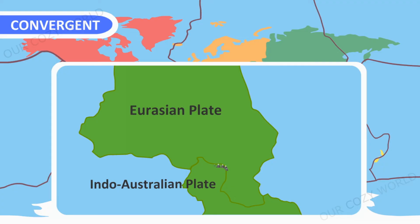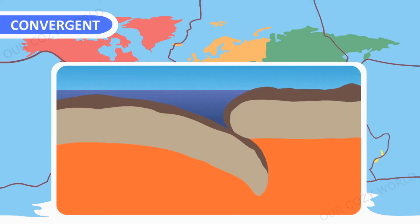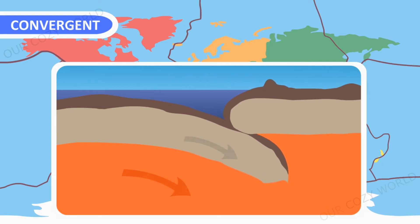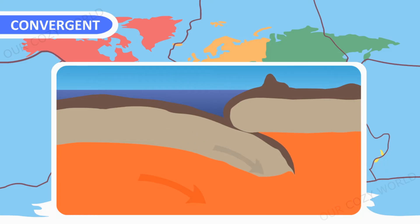Incidentally, these two tectonic plates are still colliding, which is why the Himalayas continue to grow a few millimeters each year. The second option is the collision of a continental plate with an oceanic one. The heavier oceanic plate sinks below the lighter continental plate, reaching the mantle and melting into magma. Magma rises and erupts, creating volcanoes.